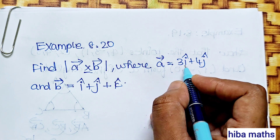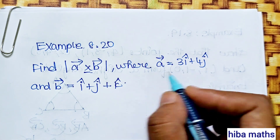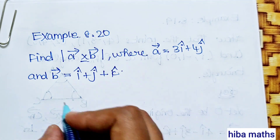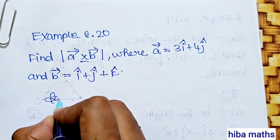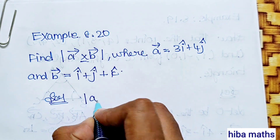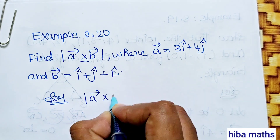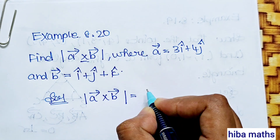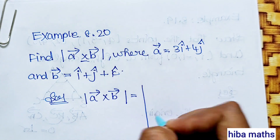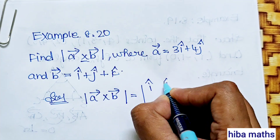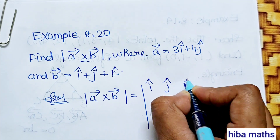This is a cross product problem. Vector a = 3i + 4j, vector b = i + j + k. The cross product is computed using the matrix determinant format with i, j, k in the first row.